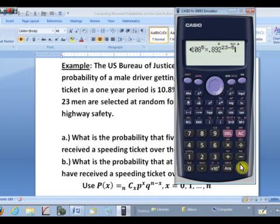And so it looks like that probability is a little bit over 6% that exactly 5 of these 23 will have gotten a speeding ticket over the last year. So that's how we can compute a discrete probability, in other words, a probability for just one value.